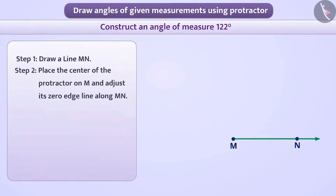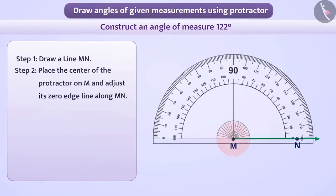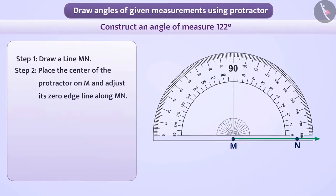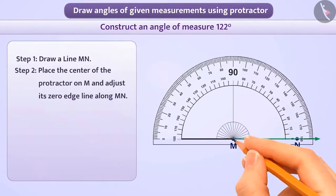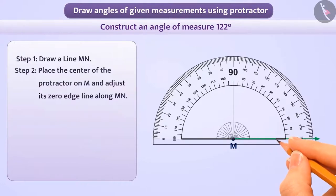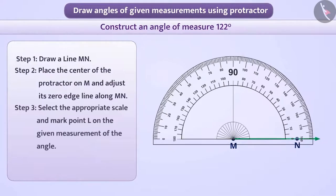Step 2. By placing the centre of the protractor on M, we will adjust the protractor in such a way that its zero edge line is along MN.